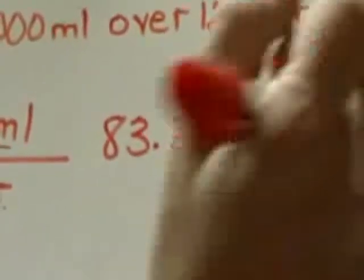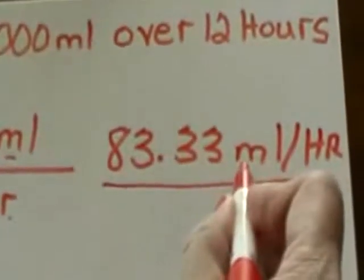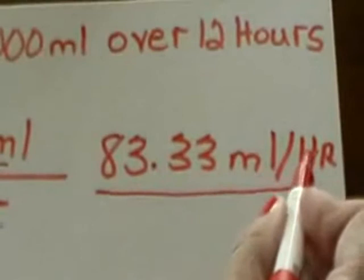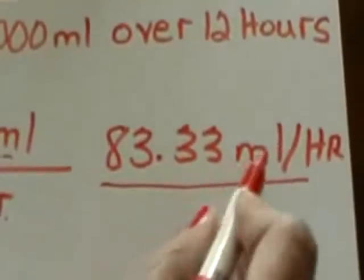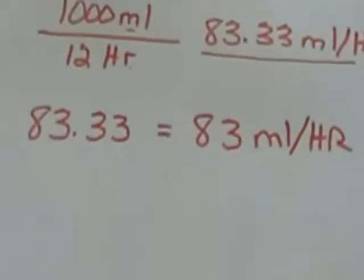Now, you always must put with your answer in the blank what you are solving for, 83.33 milliliters per hour.